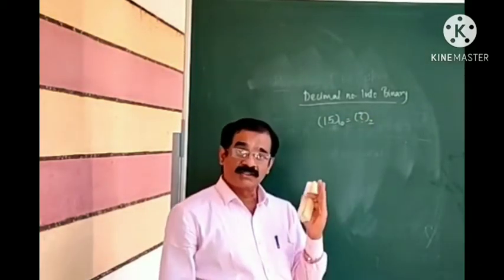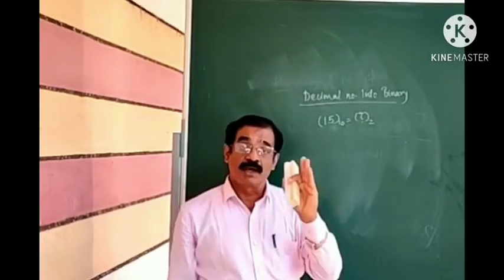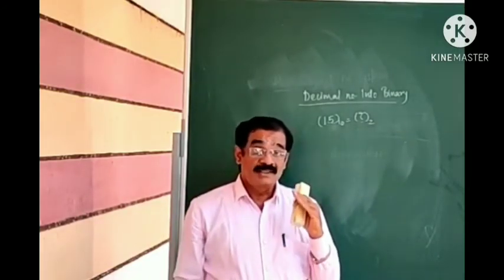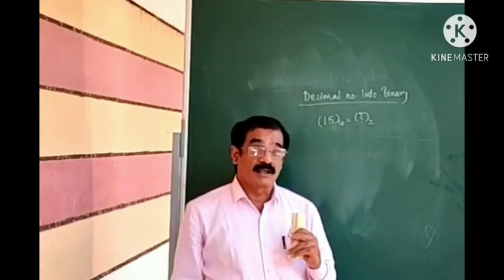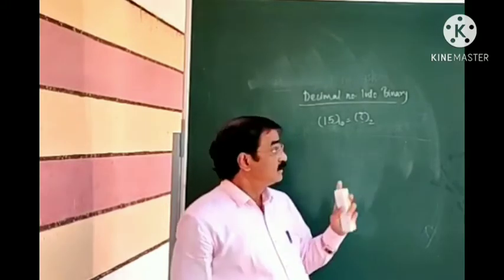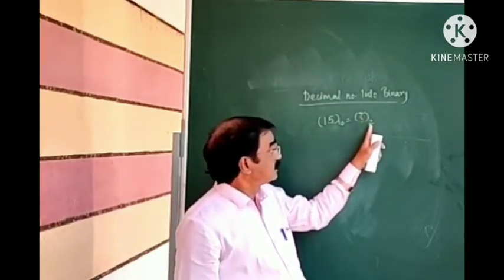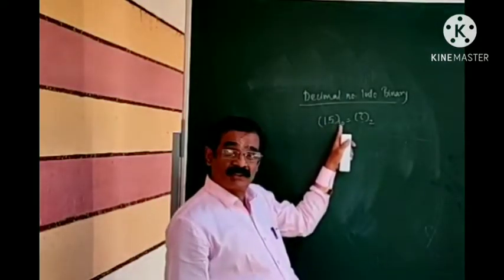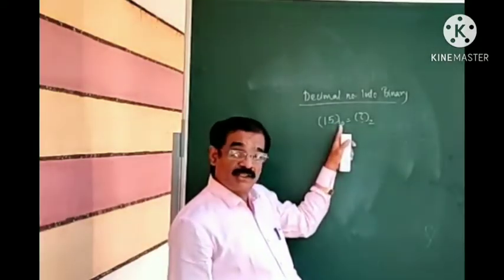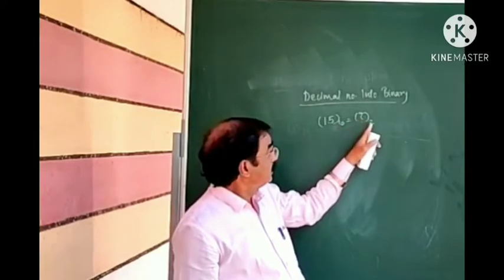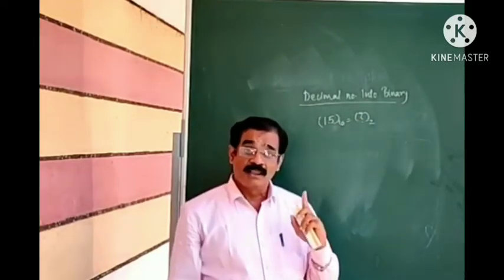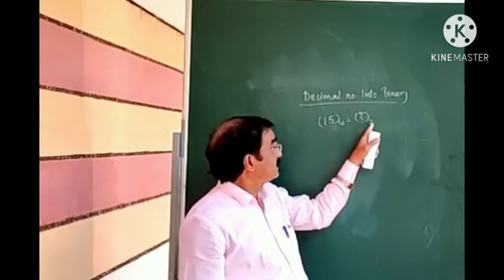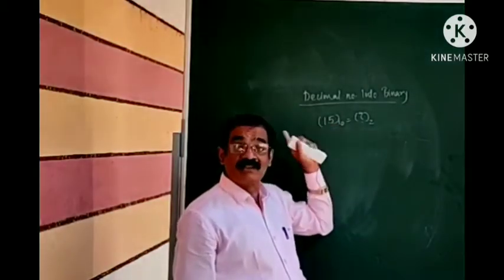15 decimal is not a binary number — how to convert it? We have to successively divide the decimal number by the base of the new number system. Since the new number system is binary, the base is 2. So we divide the decimal number successively by 2.